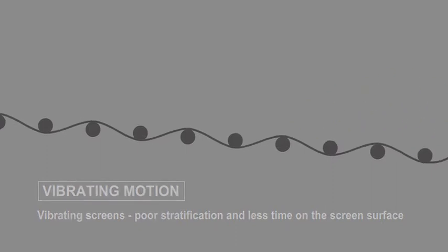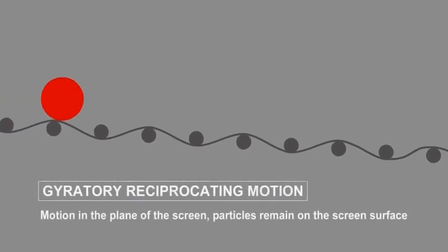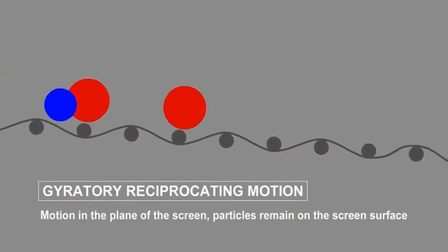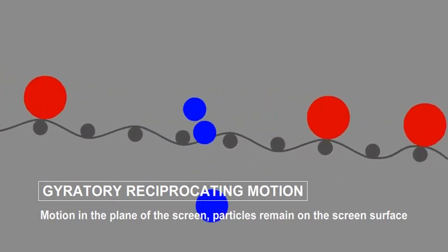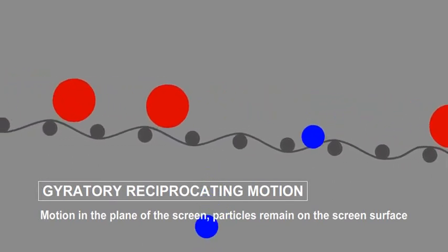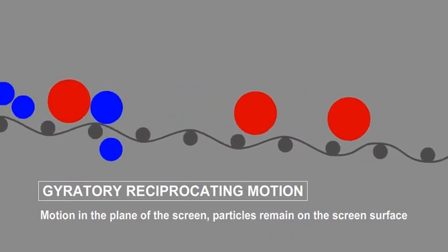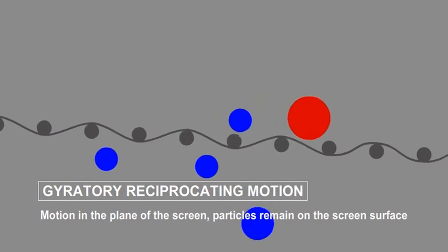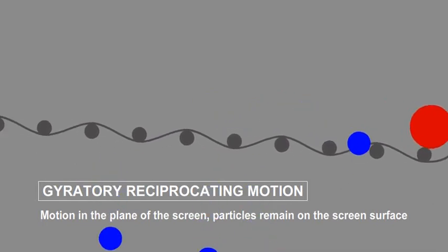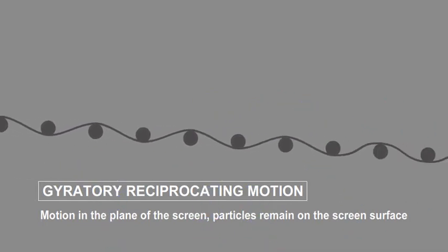A gyratory or gyratory reciprocating motion is generally in the plane of the screen surface without a vertical component, so the particles are in direct contact with the screen surface for maximum exposure to the aperture. A separator with a gyratory reciprocating motion in the plane of the screen surface will be more efficient than one utilizing a vibrating motion with a strong vertical action.